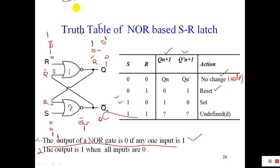Both outputs being 0 does not fulfill the required condition, because if Q is 0 then Q bar should be 1 — they are complements of each other. But here both are 0, which is a contradiction. This is why this condition is called the Invalid or Undefined condition.